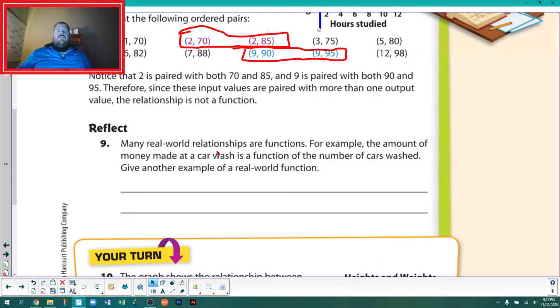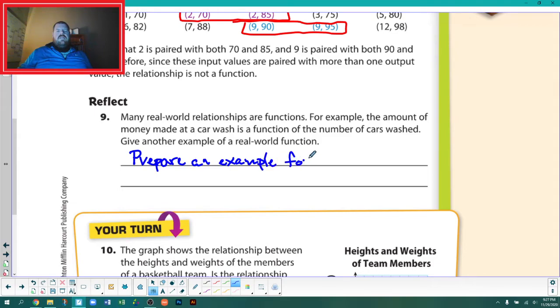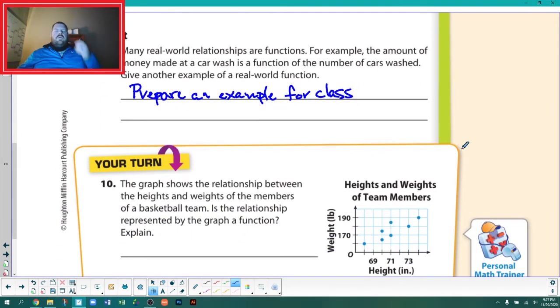It says many real-world relationships are functions. For example, the amount of money made at a car wash is a function of the number of cars washed. Give another example. I'm just going to ask you to prepare an example. Bring an example of a real-world function to class tomorrow.